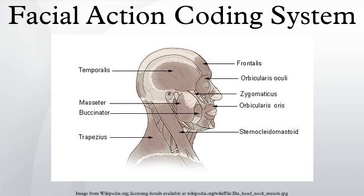Using FACS, human coders can manually code nearly any anatomically possible facial expression, deconstructing it into the specific action units and their temporal segments that produce the expression. As AUs are independent of any interpretation, they can be used for any higher-order decision-making process including recognition of basic emotions, or pre-programmed commands for an ambient intelligent environment. The FACS manual is over 500 pages in length and provides the AUs, as well as Ekman's interpretation of their meaning.